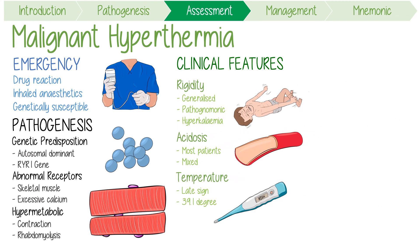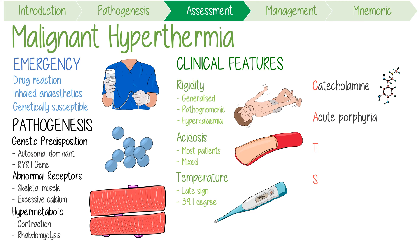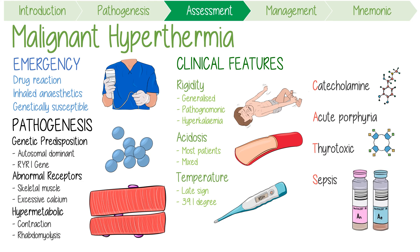Some key differentials that mimic this condition are the CATs: catecholamine tumor or a pheochromocytoma, A for acute porphyria crisis, T for thyrotoxicosis, and S for sepsis.